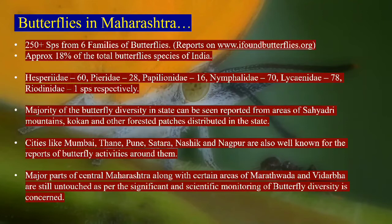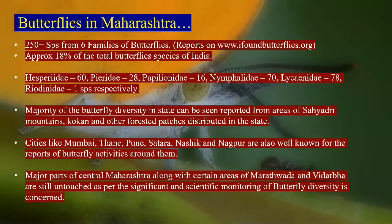Maharashtra has butterflies from all six families, and shows the presence of 18% of India's total species diversity. The numbers are approximately: Hesperiidae — 60, Pieridae — 28, Papilionidae — 16, Nymphalidae — 17, Lycaenidae — 78, and Riodinidae — 1, with a suspect second species as well.